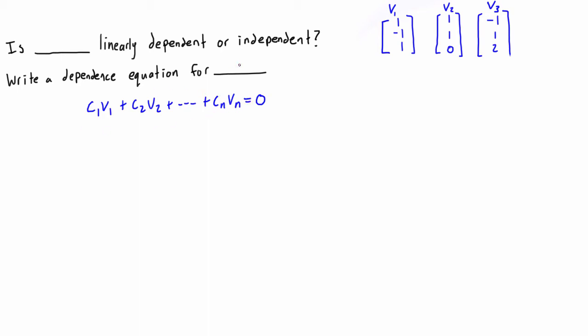If the opposite is true, so if we can't generate this expression in this form that's equal to zero with at least one of these scalars not being zero, then we just say that the set of vectors is linearly independent.